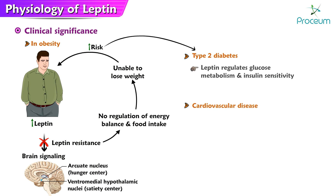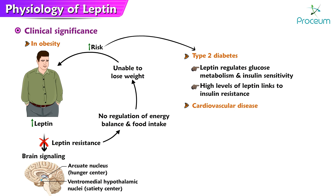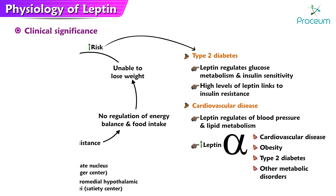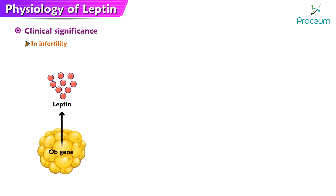In type 2 diabetes, leptin has been shown to play a role in the regulation of glucose metabolism and insulin sensitivity. High levels of leptin have been linked to insulin resistance, which is a key factor in the development of type 2 diabetes. In cardiovascular disease, leptin has been shown to play a role in the regulation of blood pressure and lipid metabolism, with high levels linked to an increased risk of cardiovascular disease and other metabolic disorders.